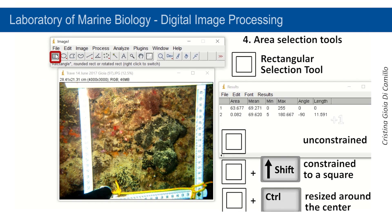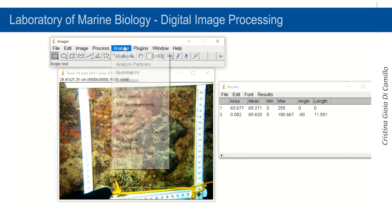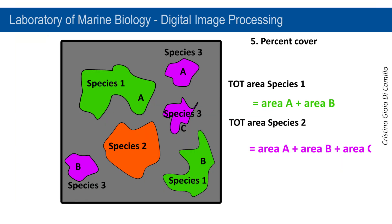To get the area inside a quadrat, select the Rectangular Selection tool and draw a rectangular shape in correspondence of the surface you want to measure. ImageJ can be used to determine percent cover of benthic organisms in photographic samplings. The same species can be present in several zones of the sampled area; therefore, it is necessary to sum the area of each portion to obtain the total cover of each species.